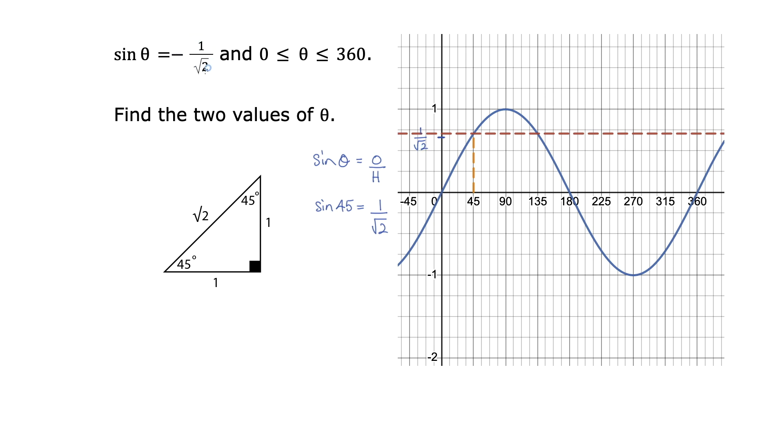What we require is negative 1 over root 2. In other words, there's a line down here going across from this point. And let me draw that in. So as we can see, it intersects at this point here and this point here.